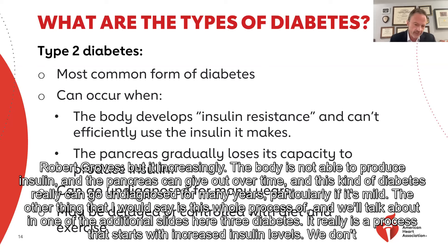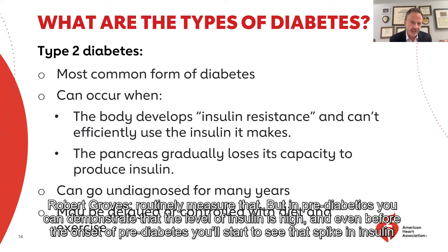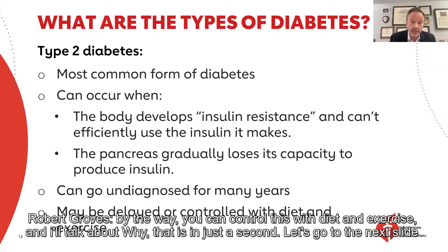This kind of diabetes really can go undiagnosed for many years, particularly if it's mild. The whole process of pre-diabetes really is a process that starts with increased insulin levels. We don't routinely measure that, but in pre-diabetics you can demonstrate that the level of insulin is high. Even before the onset of pre-diabetes, you'll start to see that spike in insulin. You can control this with diet and exercise, and I'll talk about why that is in just a second.